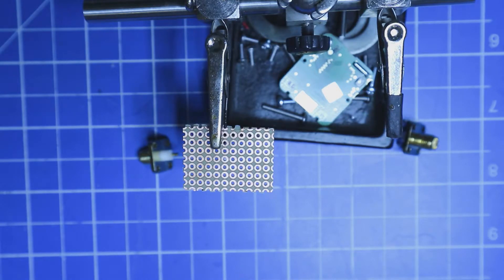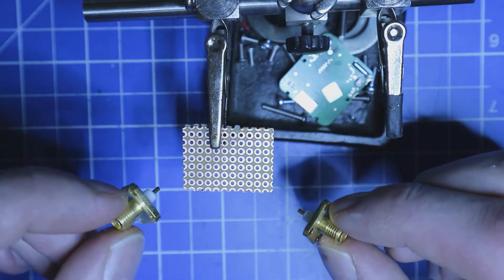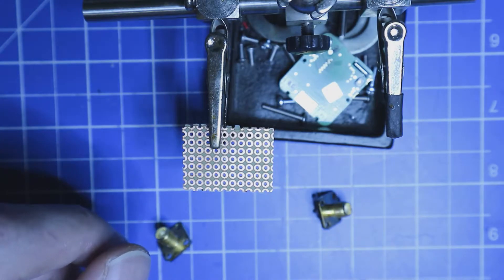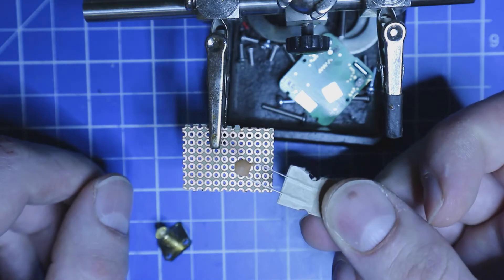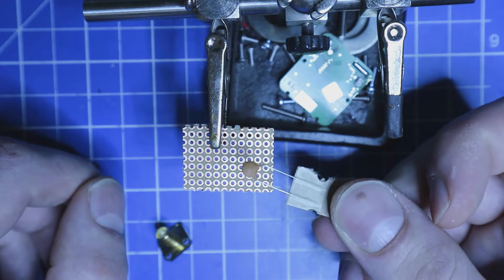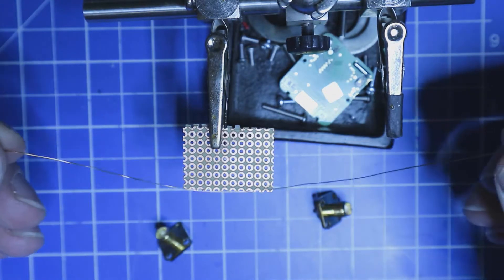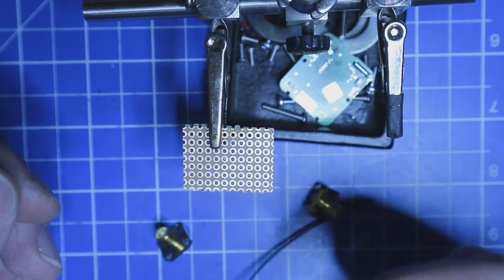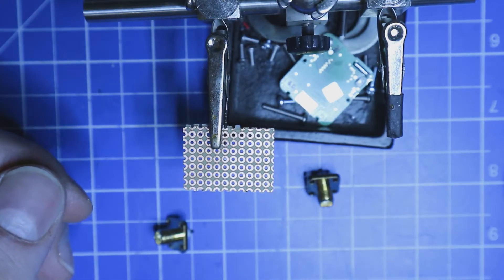The things we are going to need is a small piece of perfboard or protoboard, two connectors you want to use. I'm using female SMA connectors, a capacitor. I'm using a 100 picofarad capacitor as mentioned in the guide from SotaBeams, a wire to make our coil, and a normal cable where you put the power over.